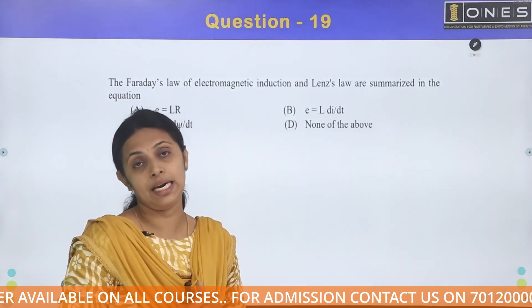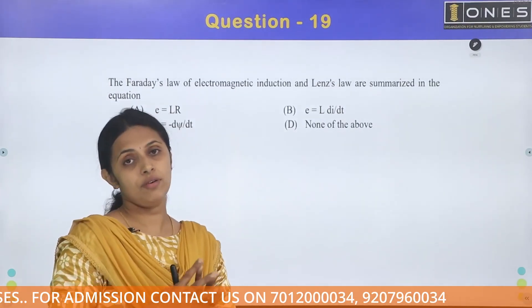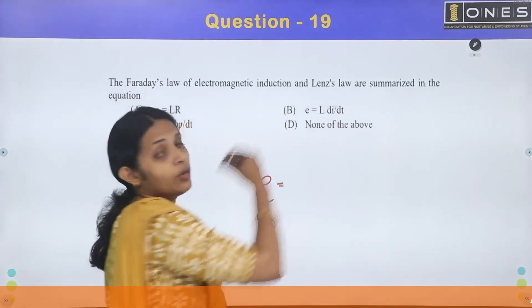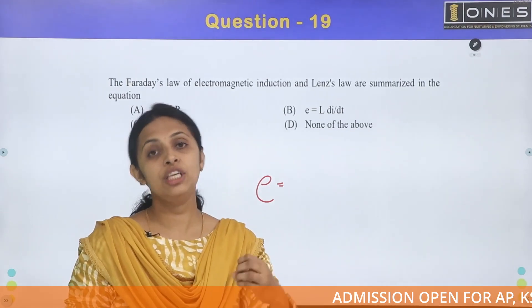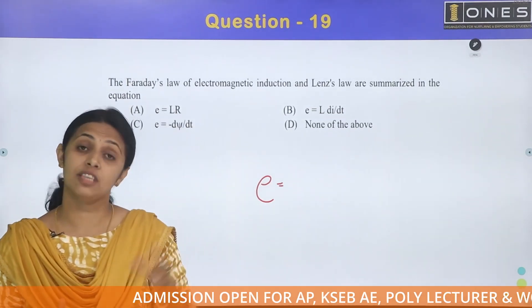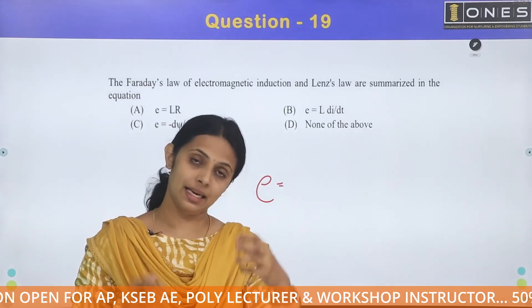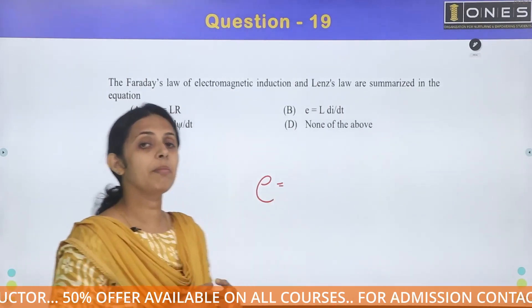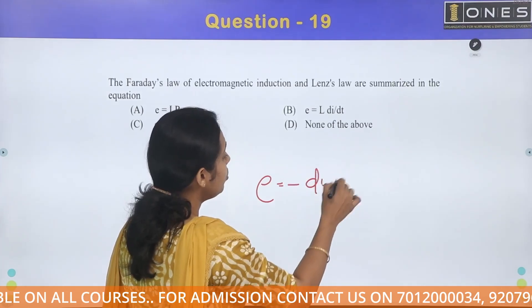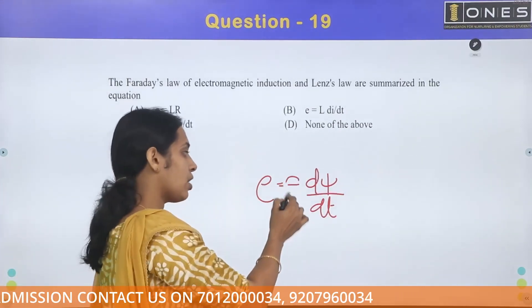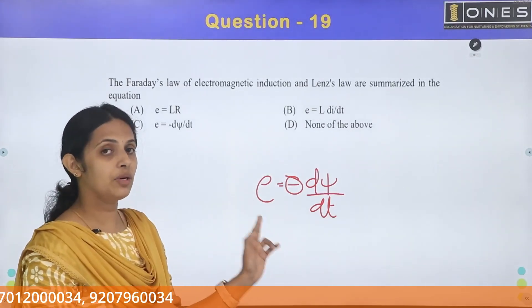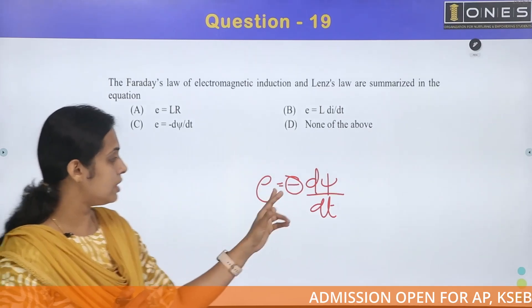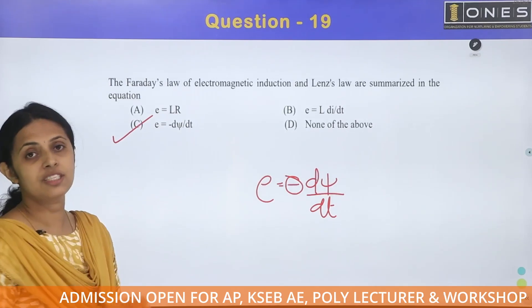Faraday's second law states that the magnitude of induced EMF is proportional to the rate of change of flux. Lenz's law gives the direction of the induced EMF, opposing the cause. Together, these are summarized as: e = −dΨ/dt. The answer is Option C.